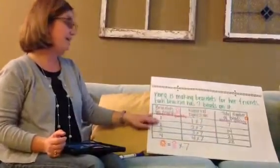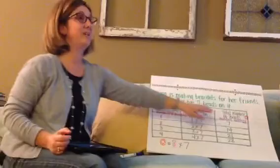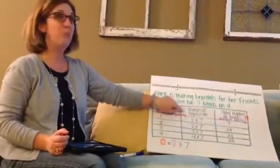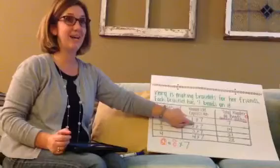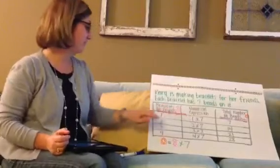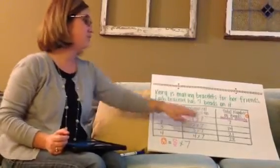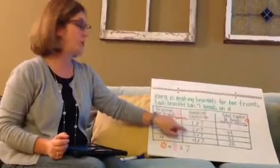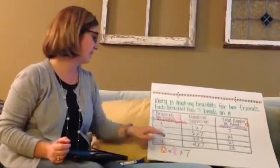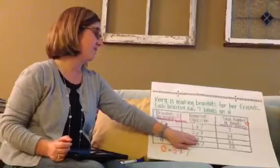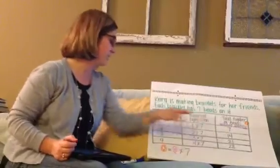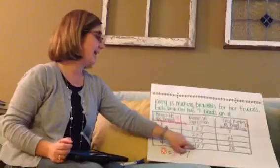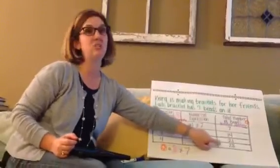So if we have one bracelet, we're going to have seven beads. We can show that in a numerical expression: 1 times 7. Two bracelets, we're going to use 14 beads — or the numerical expression 2 times 7. Three times 7 gives us 21 for three bracelets. And for four bracelets, 4 times 7 is 28.